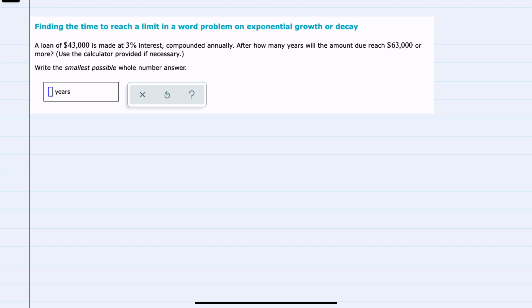And in this example, we're told that we have a loan of $43,000. It's being made at 3% interest, compounded annually. And we want to know after how many years will it take for the amount due to reach $63,000 or more. So no payments are being made, only the compounding of interest.